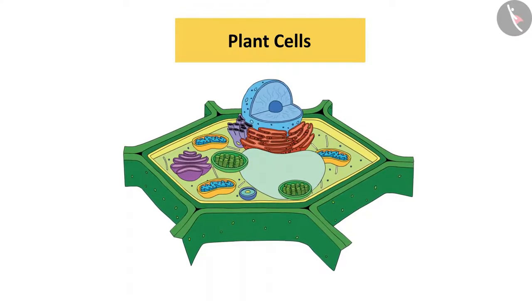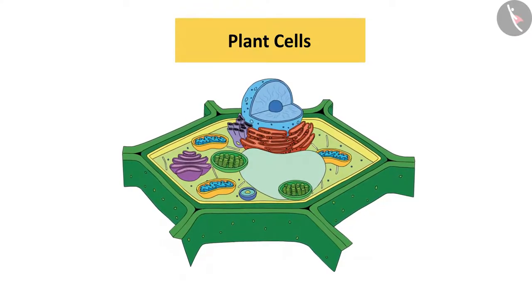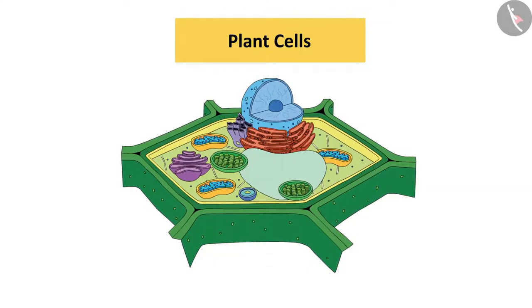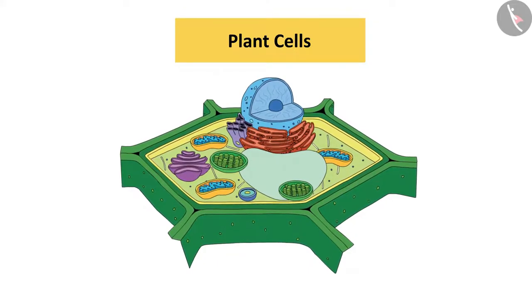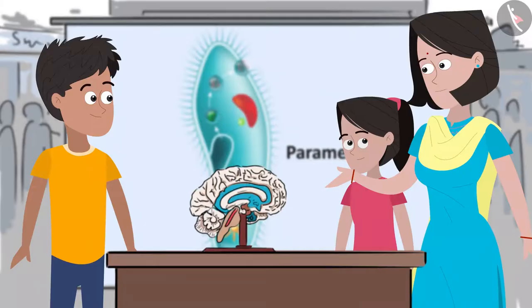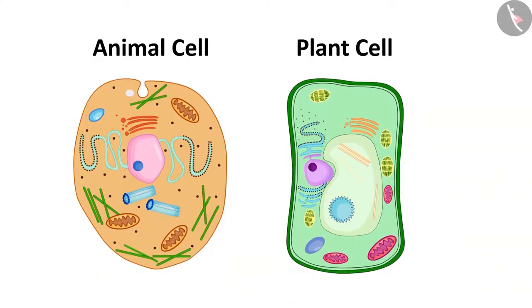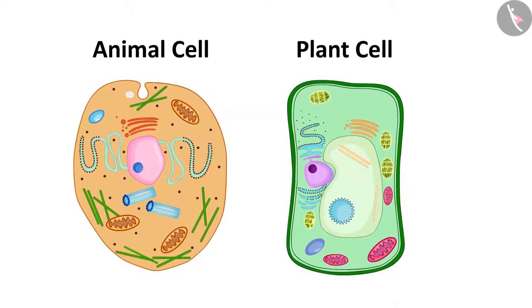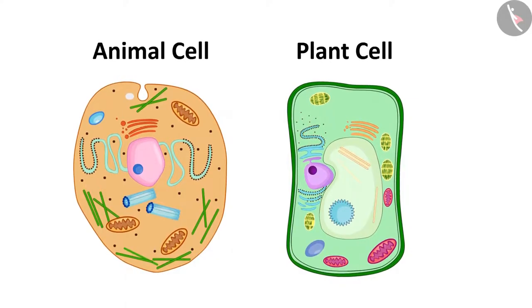For example, the chloroplasts for photosynthesis and the rigid cell wall that helps the plant hold up in the absence of a skeleton. See this poster. It shows the difference between plant cells and animal cells. Can you figure out this difference?